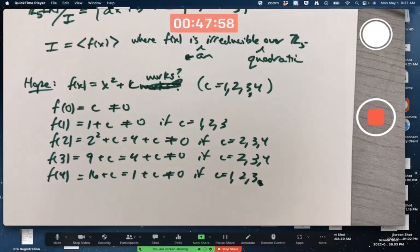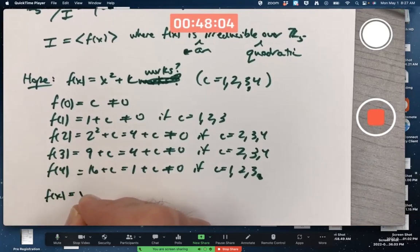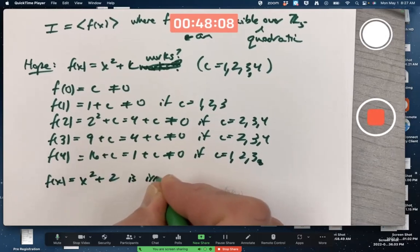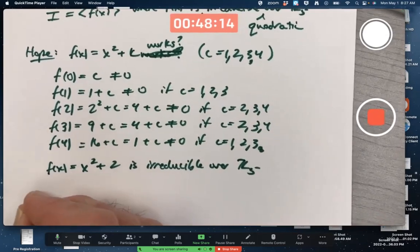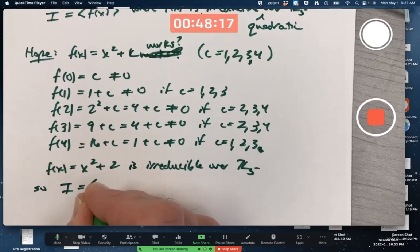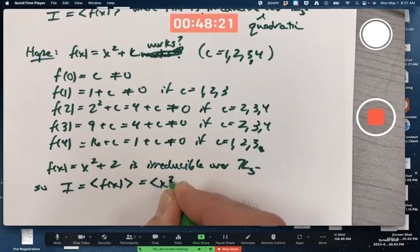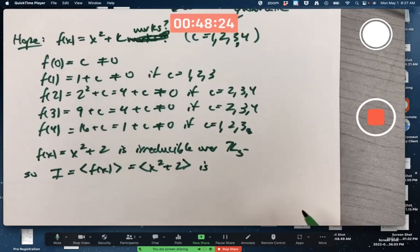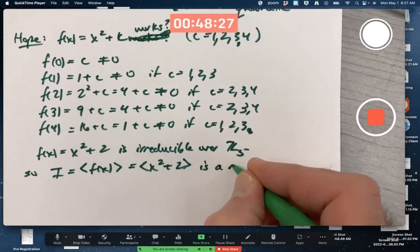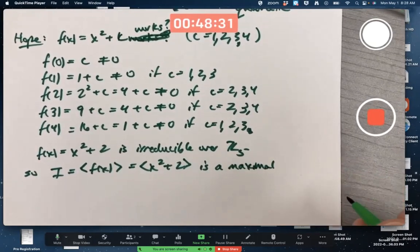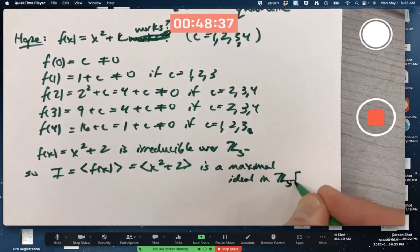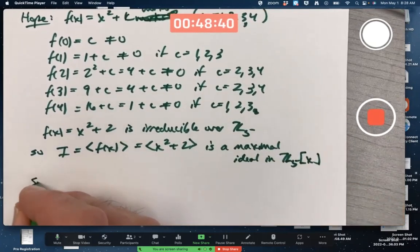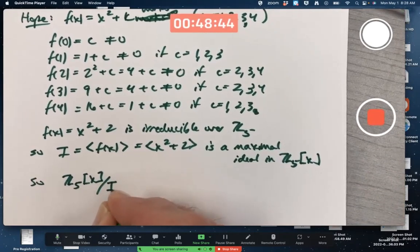So, to make sure all these are not zero, looks like we should pick C to be two or three. Pick one of them. Looks like F of X equals X squared plus two is irreducible over Z5. So, what can we say about that? That means I equals the principal ideal generated by F of X is maximal ideal, right? That's a theorem. These are theorems you should work out remembering. It's maximal ideal in Z5X.